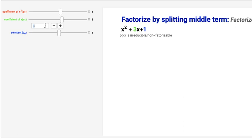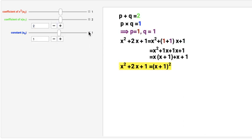For example, I make it 2 and I'm going to keep it 1. Now this is factorizable. This is x² + 2x + 1 = (x + 1)² by splitting the middle term. We are able to factorize this given quadratic polynomial x² + 2x + 1.